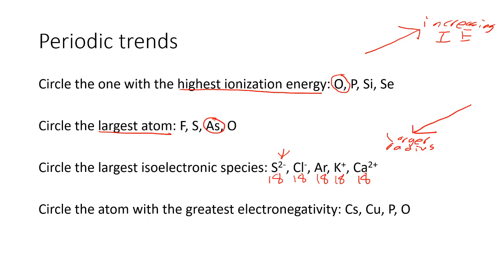Since all species have the same number of electrons, we can't use the number of electrons to explain size differences. The only change here is the number of protons. So my S²⁻ sulfide ion is going to be my largest, because it has the fewest protons pulling on these electrons, giving it the weakest effective nuclear charge across all these electrons.